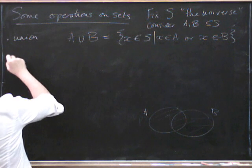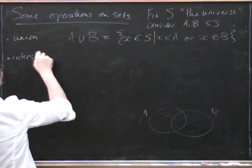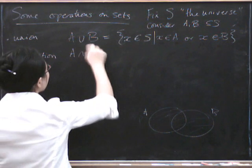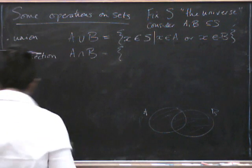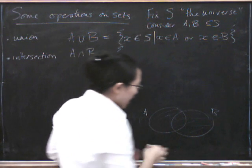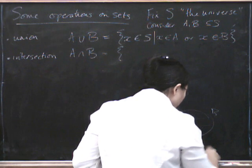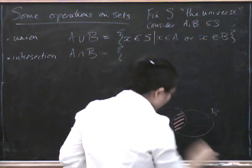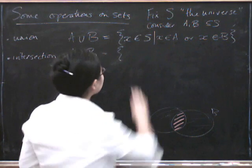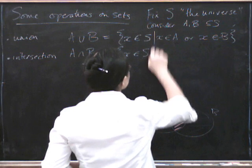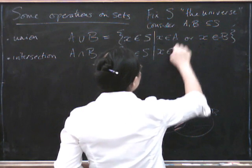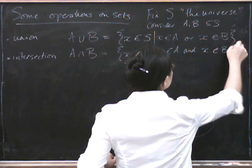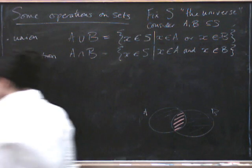Okay. Intersection. The intersection of A and B is all the X's which are in both A and B. Oh, I have to use a colour. I wonder if this colour is going to come up. Pink. So this is the intersection, the bit where you're in both A and B. So this is X in S, such that X is in A and X is in B.